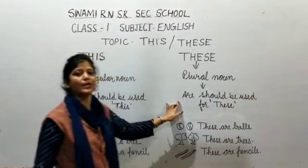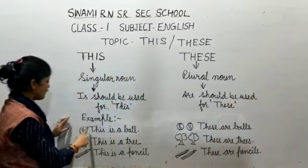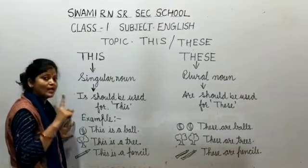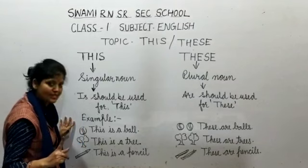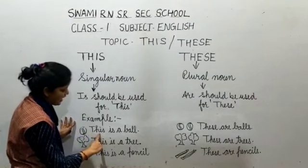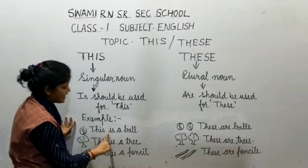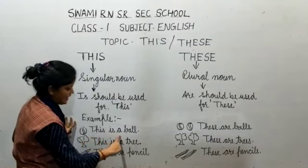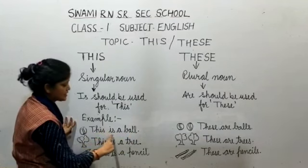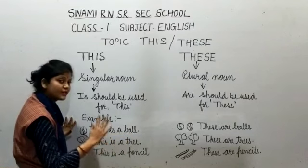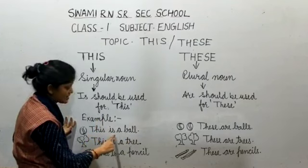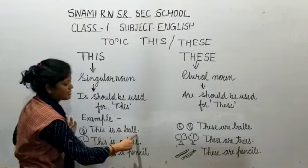Now I am giving some examples. First, what is this? This is a ball — only a single ball, so we will use 'this'. All of you read with me: This is a ball.